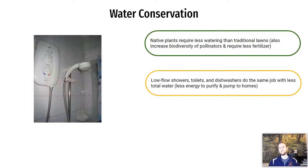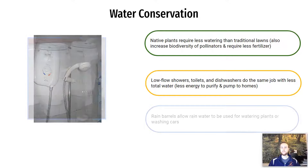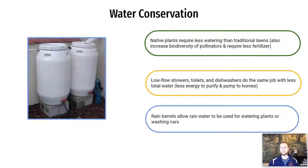Another option is low-flow showerheads, low-flow toilets, or low-water appliances — a dishwasher is a great example. Finally, you can use a rain barrel to capture rainwater, which can then be used to water your garden, wash your sidewalk, or even wash your car. This allows you to take advantage of natural rainwater instead of having water pumped from a municipal treatment plant. All of these are ways to save energy when it comes to water usage.